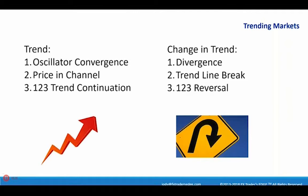The starting point is 0.1. It moves up, labeled 0.2 at the high. Price comes down for 0.3. Once price takes out the 0.2 high, that's your 1-2-3 trend continuation. You're buying the breaks every time price makes a new high. If we're in a wave three, you're going to get shallow corrections and these 1-2-3 trend continuations continuously until the wave three ends. The change in trend is the opposite: you look for divergence, a trend line break, and a 1-2-3 reversal.